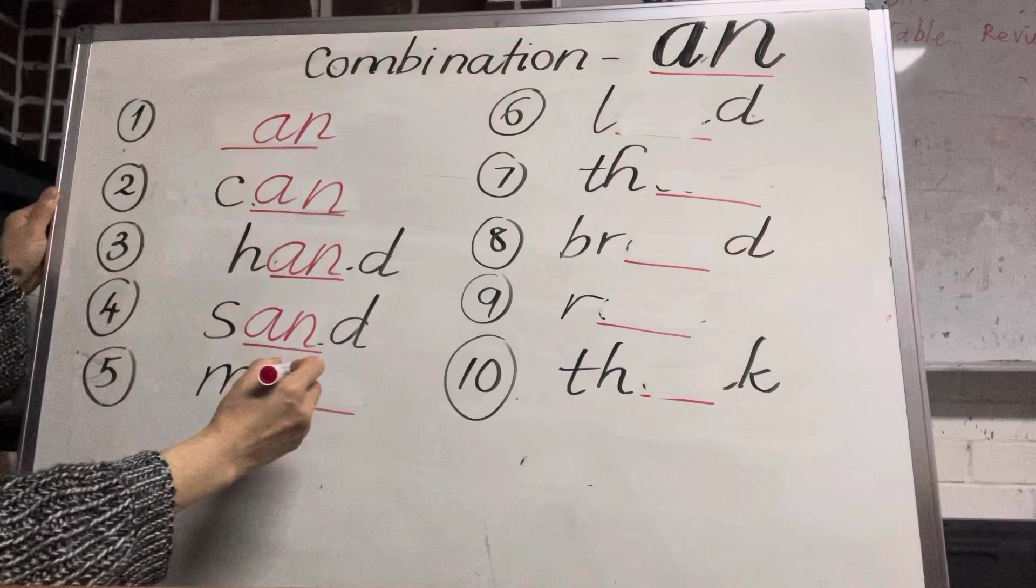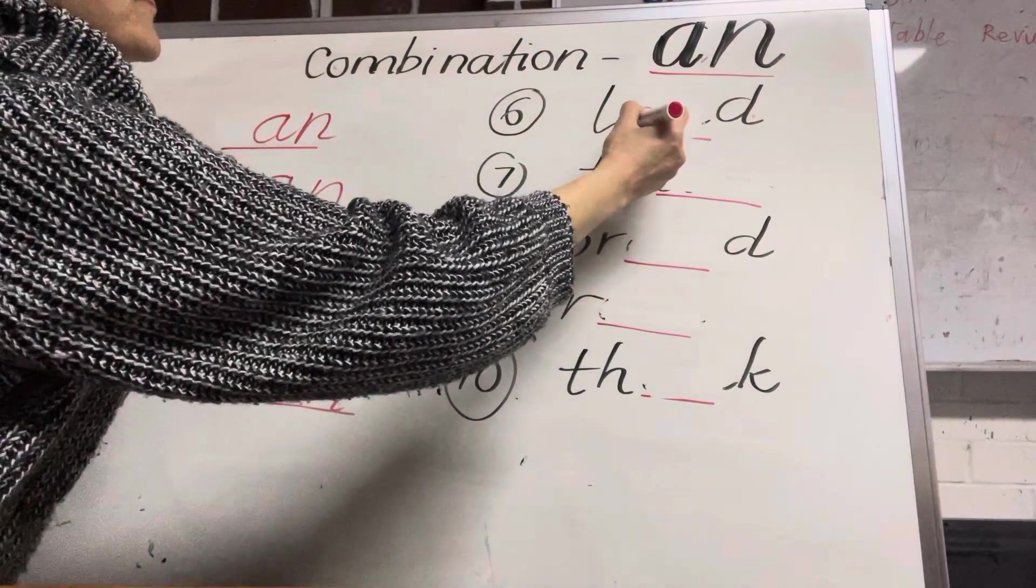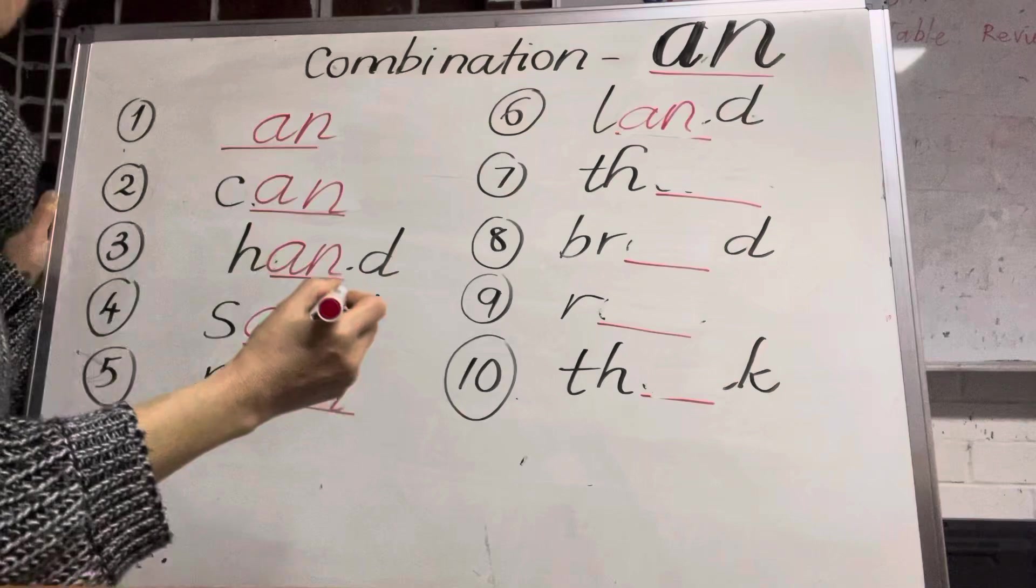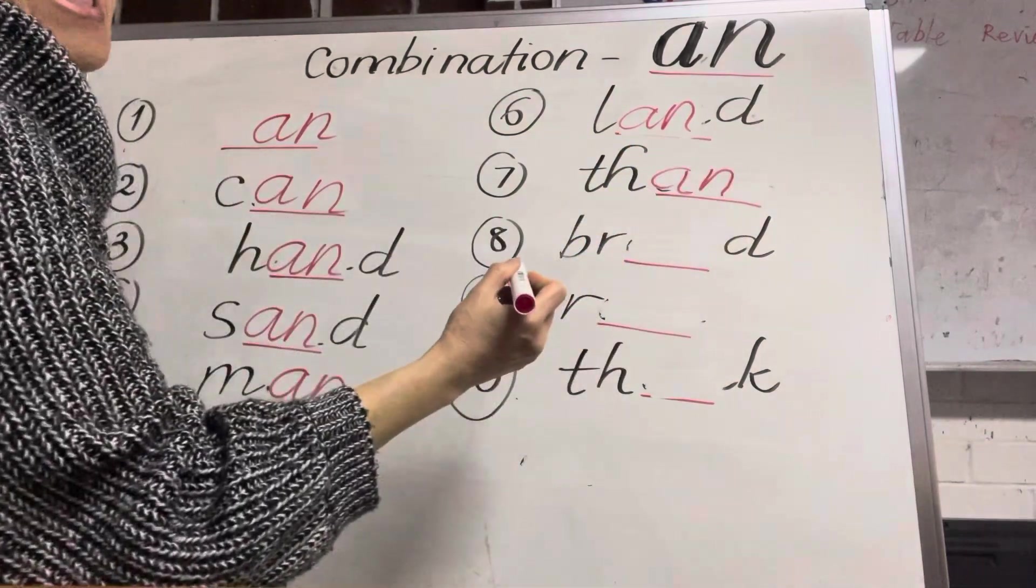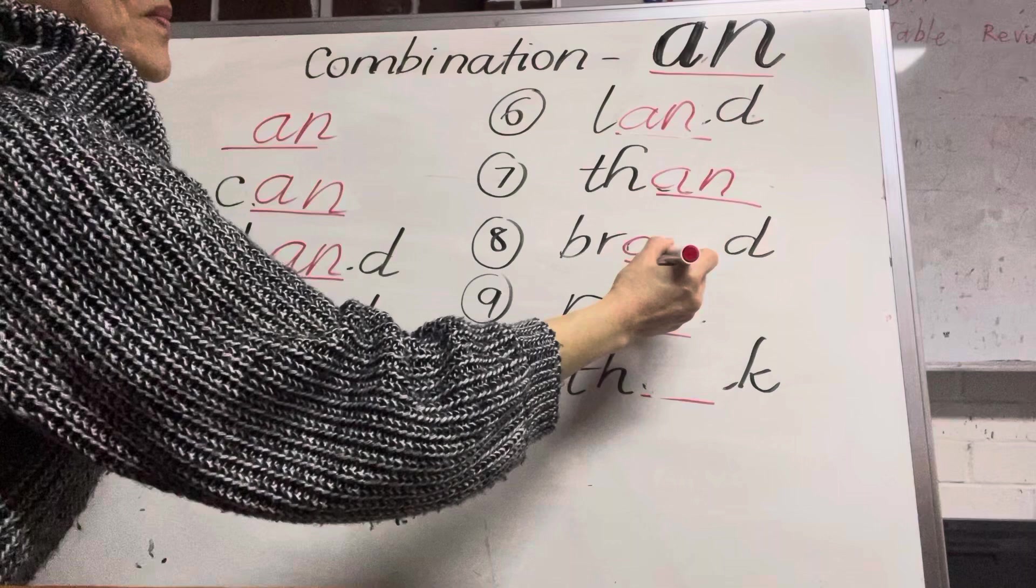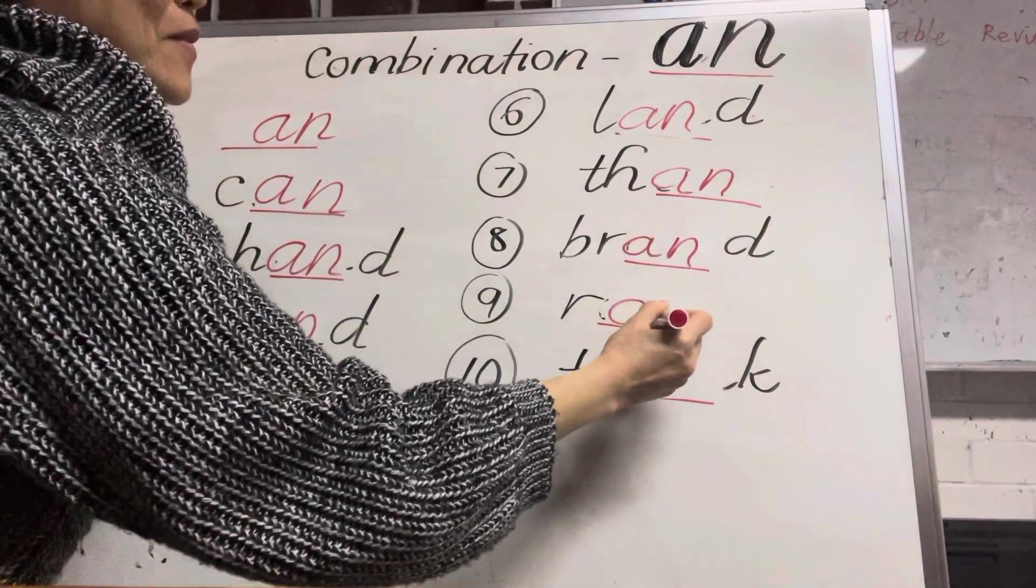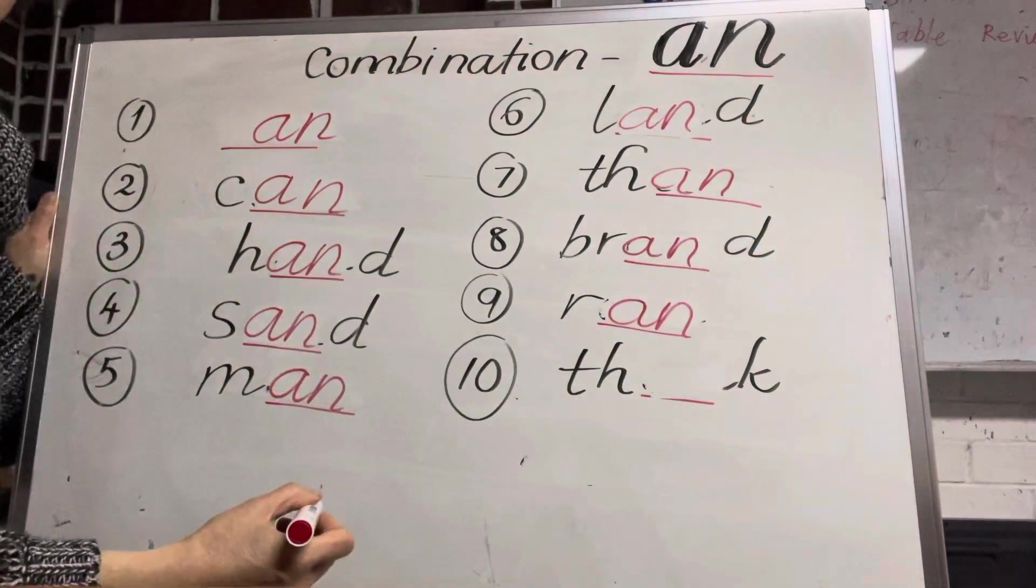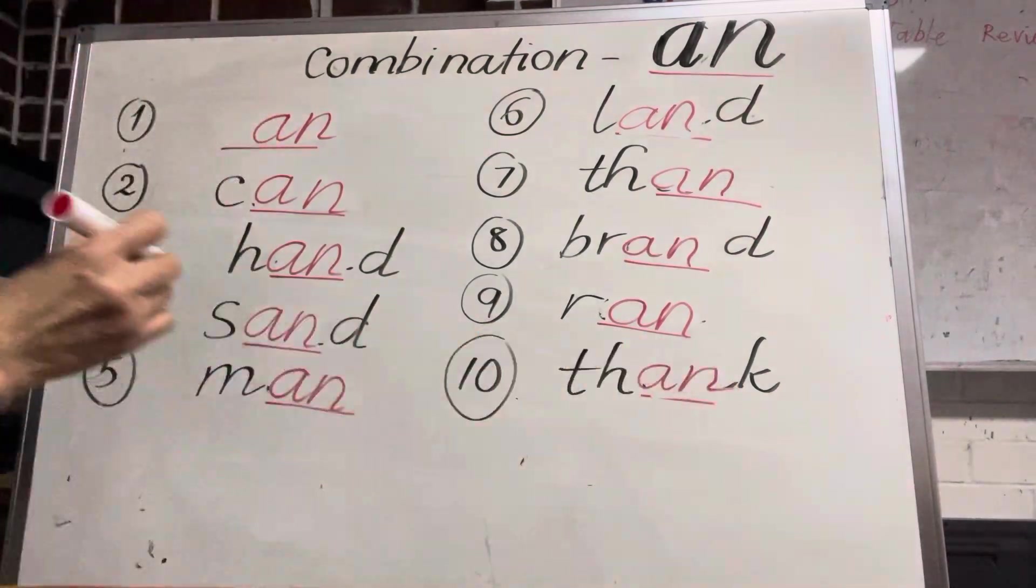Man. What's missing? Land. What's missing? A and N. Easy. Brand. What's missing? Brand. And the last one, thank. Yeah, very good. Easy. Now let's do the work.